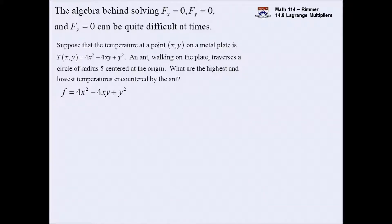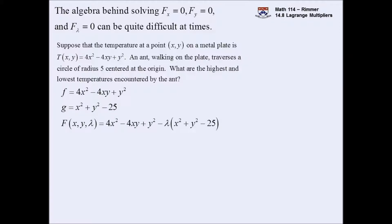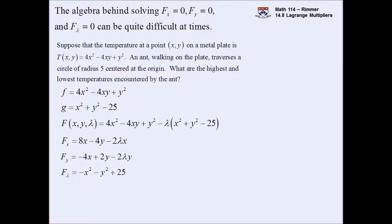And g is x² + y² - 25 = 0. I set this up by creating capital F and taking its partials, making sure they're all zero at the same time - forcing the gradient of capital F to equal zero. The x-partial gives 8x - 4y - 2x·λ = 0. The y-partial gives -4x + 2y·λ = 0. And the λ-partial is just the constraint: -x² - y² + 25 = 0. These all need to be zero at the same time.